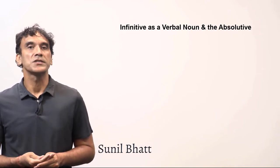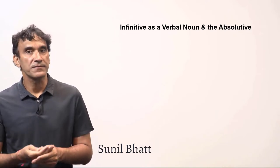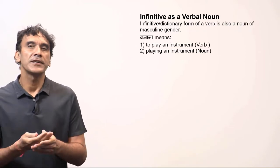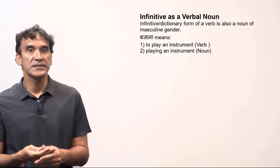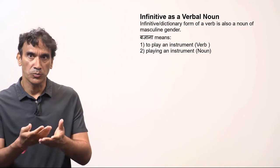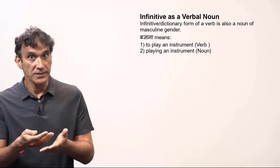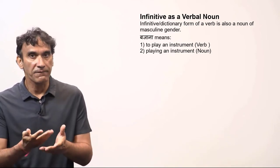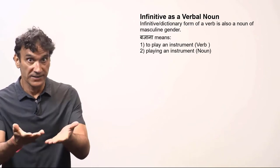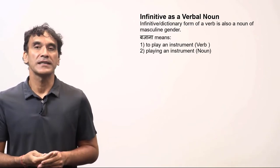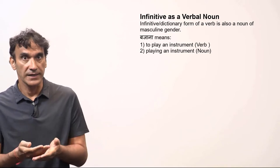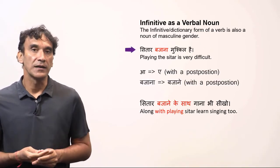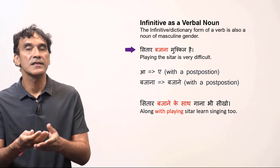The next grammar point is the usage of the infinitive as verbal nouns. The infinitive or dictionary form of the verb ends in 'na', such as 'bhajana' (to play), 'kana' (to eat), 'sona' (to sleep). It has two meanings: the first is 'bhajana' as 'to play an instrument', and the second is the noun meaning 'playing'. For example: 'sitar bhajana mushkil hai' — playing the sitar is difficult.